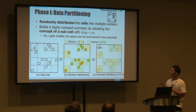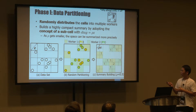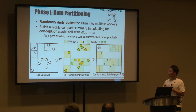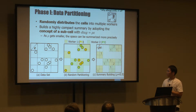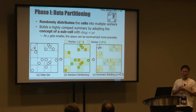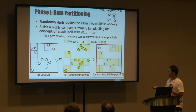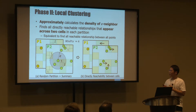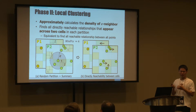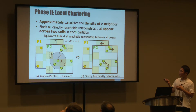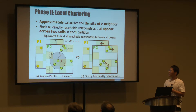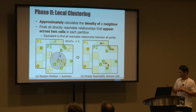Our algorithm builds a highly compact summary. In this phase, we introduce the user parameter rho, and adopt the concept of sub-cells with diagonal length rho × epsilon. As rho gets smaller, the space is summarized more precisely due to the smaller sub-cell size. In the local clustering phase, the global summary is broadcast to all workers, so each worker can approximately calculate the correct density and find all directly density-reachable relationships. Due to the proximity property within a cell, this procedure is equivalent to finding all directly-reachable relationships that appear across two adjacent cells.